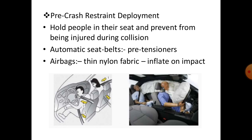Next is pre-crash restraint deployment. This holds people in their seats and prevents wing injury during a collision. A seat belt is compulsory in a car. If any person is not wearing a seat belt and the driver suddenly applies the brake, injury is created.